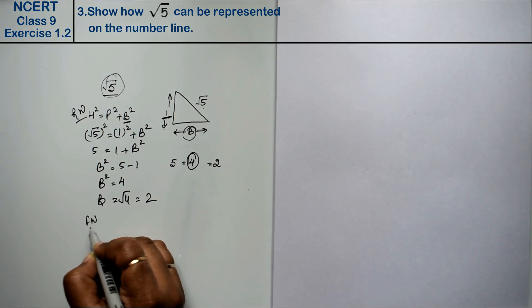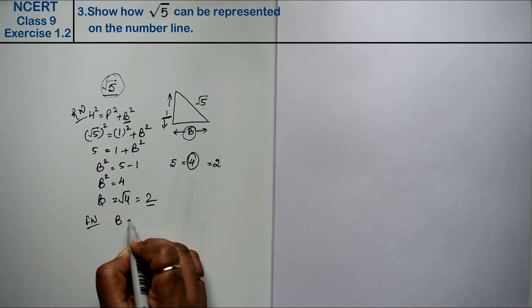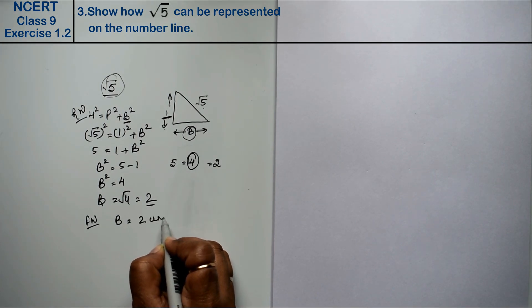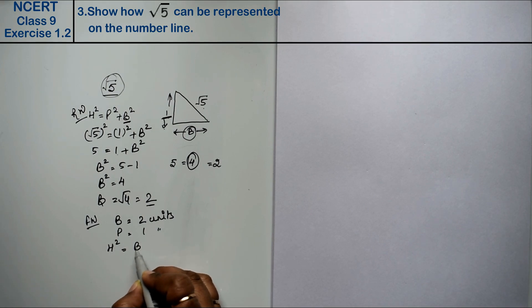For the fair work, we know that we have base 2. So now we will take base 2 units, right friends? And perpendicular as 1 unit. Now what is h formula? h square equals to b square plus p square. b is 2 square plus 1 square. So this is 4 plus 1, that is 5.